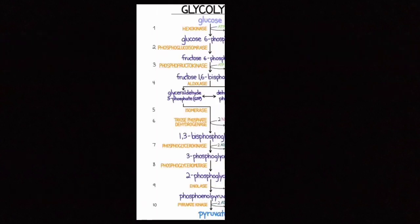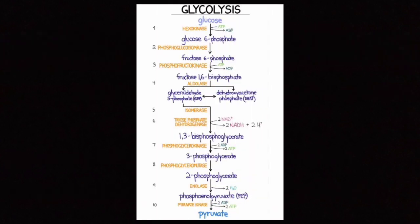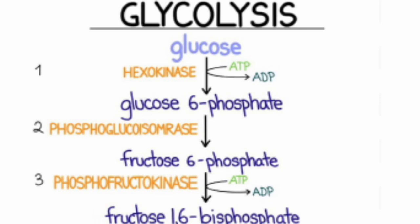The reaction begins with glucose molecules entering the cytosol of the cell. Step 1: the phosphorylation of glucose to glucose-6-phosphate in the presence of the enzyme hexokinase. Hexokinase transfers a phosphate molecule from ATP to ADP, and the reaction is irreversible under cellular conditions.